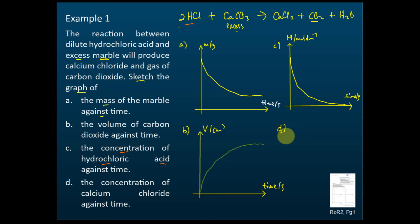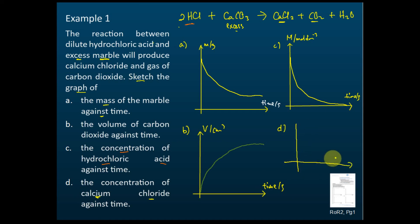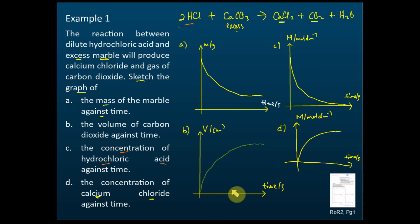Part (d) asks for the graph of concentration of calcium chloride (CaCl₂) against time. Calcium chloride is a product, so the graph looks similar to part (b) — it increases over time with the gradient decreasing. The vertical axis is molarity in mol/dm³ and the horizontal axis is time in seconds. To summarize: reactants decrease over time, products increase over time, and the rate of reaction decreases over time, so the gradient of the graph decreases over time.